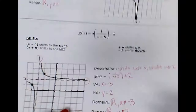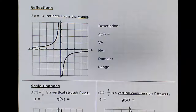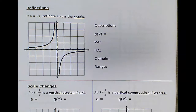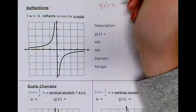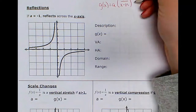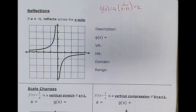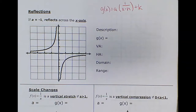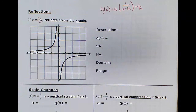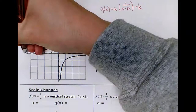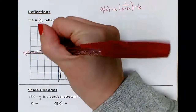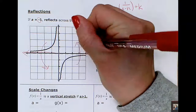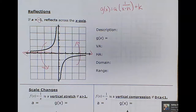Reflections are always denoted by a negative. The standard form is a·(1/(x−h)) + k. If a is negative 1, that negative indicates a reflection across the x-axis. Anything above the x-axis gets shifted below it, and anything below flips up.